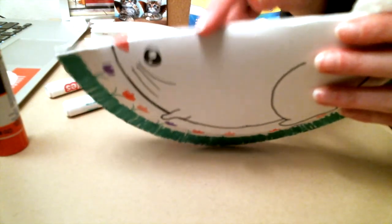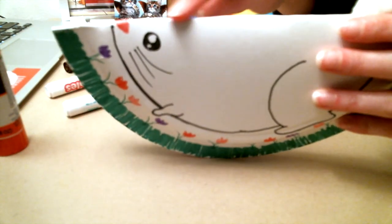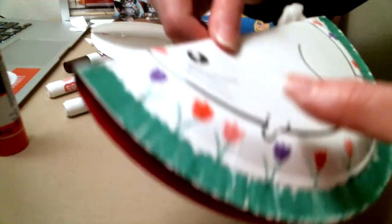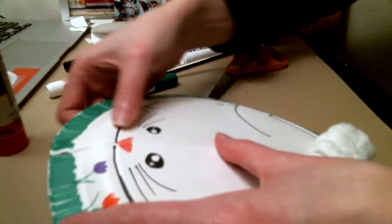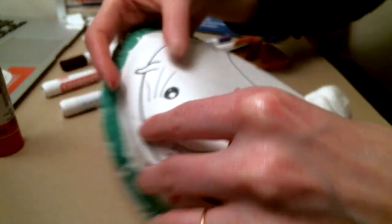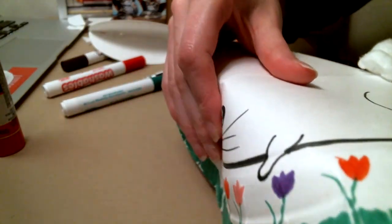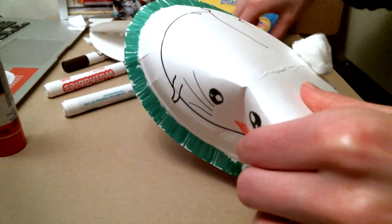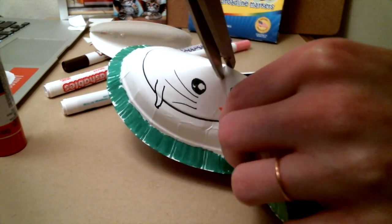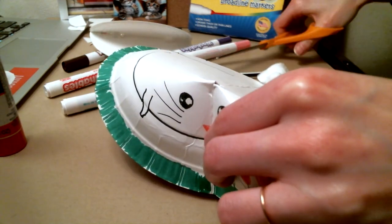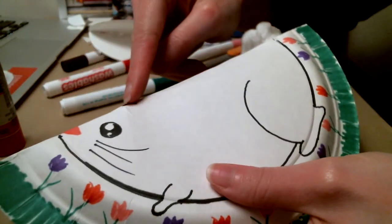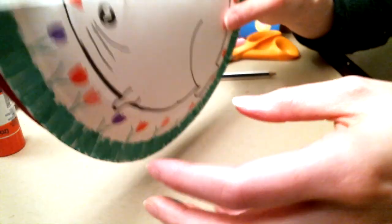Now, for the ears. Behind the eye, we will fold the paper plate just a little bit like this, and cut a little hole for the ears.